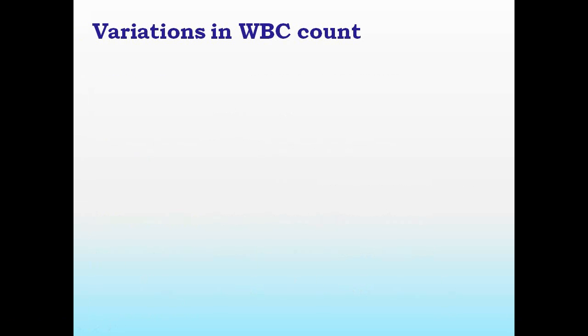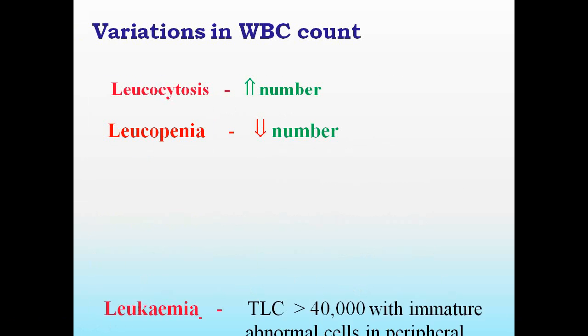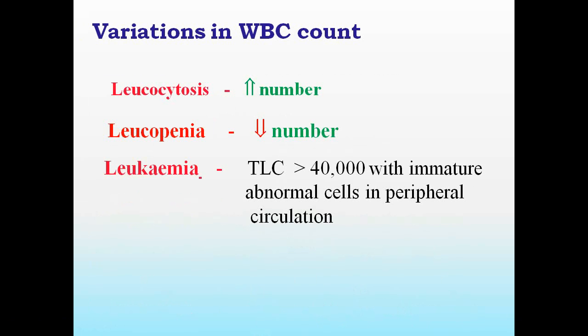When you see the variations in WBC count: first, leukocytosis — increase in their number; leukopenia — decrease in their number; leukemia — that means total leukocytic count goes beyond more than 40,000 with immature abnormal cells in peripheral circulation. This condition is known as leukopenia.